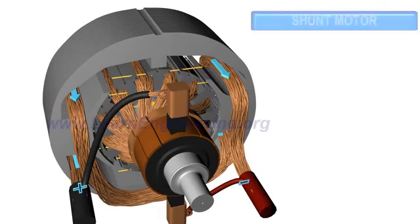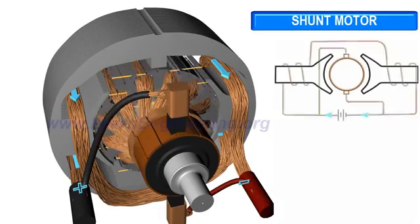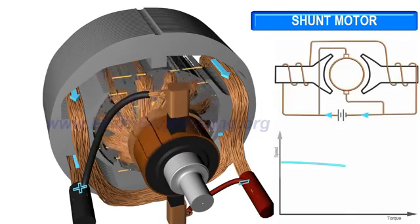The shunt motor has a low starting torque, but it is able to run almost at a constant speed, irrespective of the load acting on the motor.